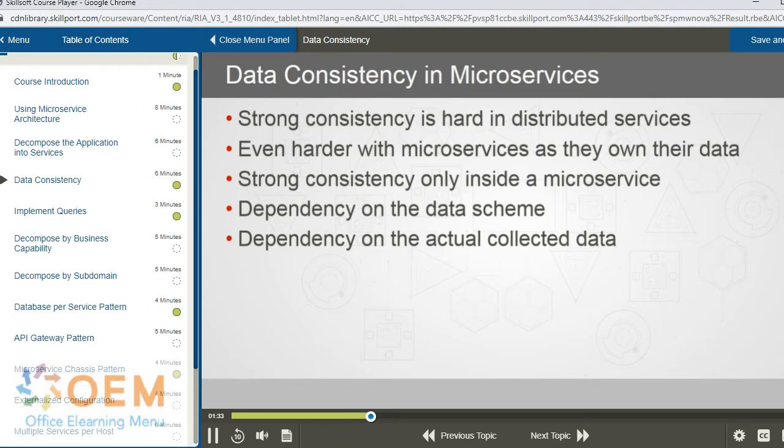There are various factors associated with the architecture and design of microservices themselves that could attribute to data inconsistency. In distributed systems, it is difficult to get strong consistency or 100% consistency.